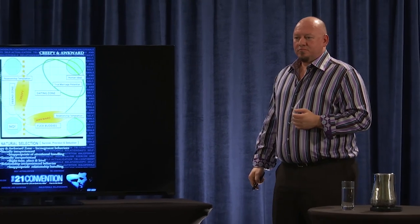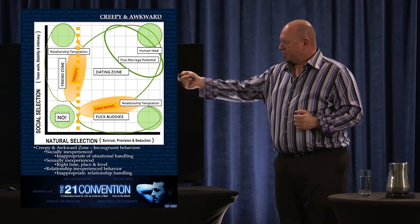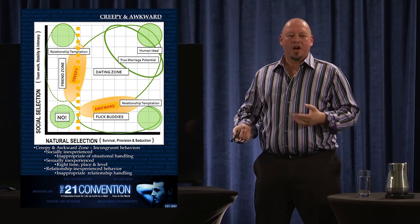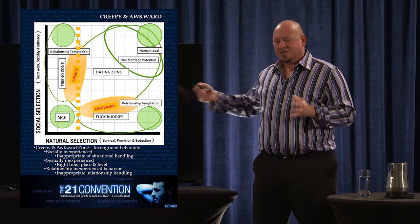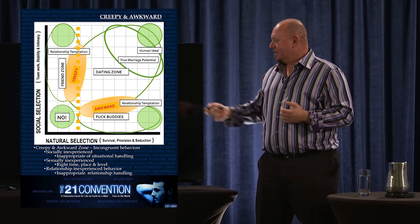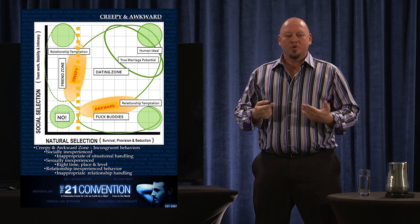This is another zone. This is a terribly important one. It's a combination of two areas between the friend zone and the fuck buddies. We refer to them as creepy and awkward. These are obstacles within our map, these are obstacles. These are topography in the realm of the sexual marketplace. We need to understand that they exist, and they exist because of incongruent behavior.